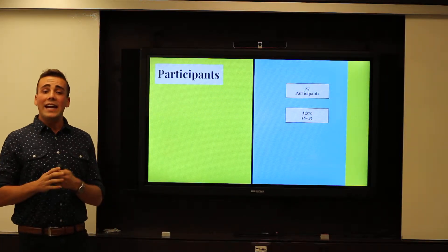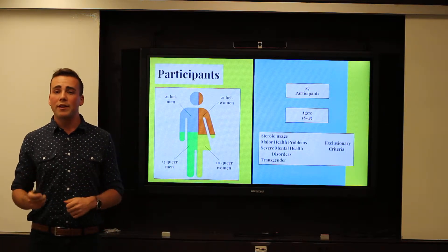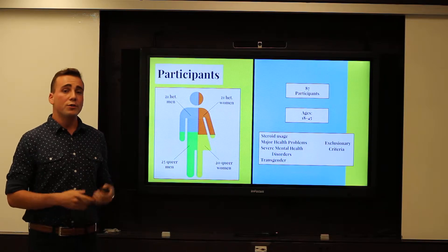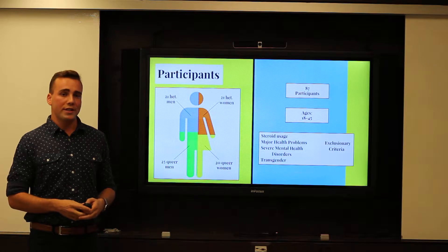The participants: there were 87 participants, ages 18 to 45. 21 of them were heterosexual men, 21 were heterosexual women, 25 were queer men, and 20 were queer women. This is all self-reporting measures of sexual orientation.